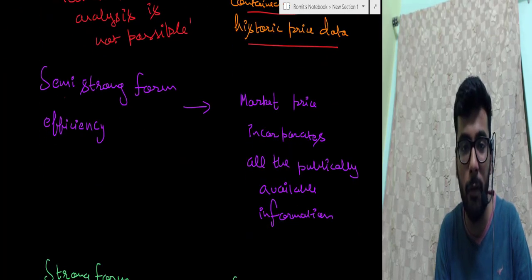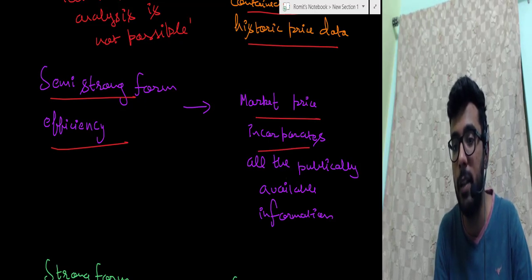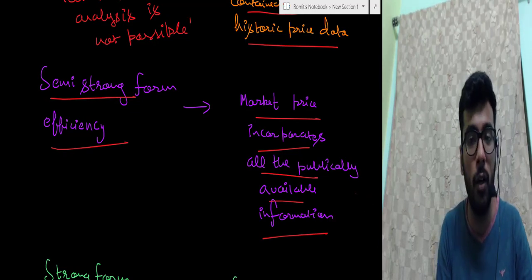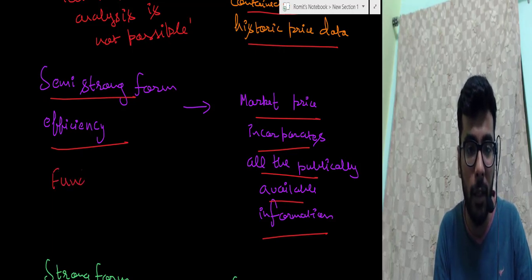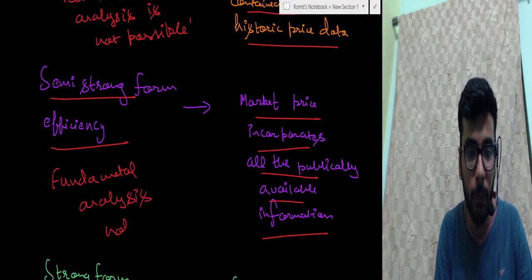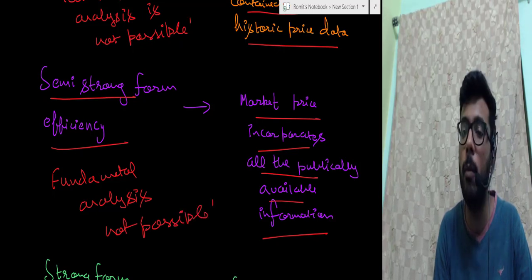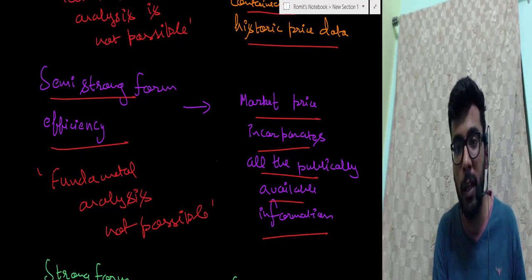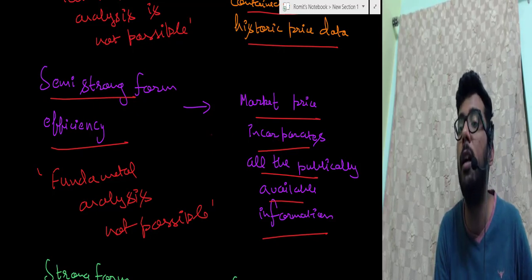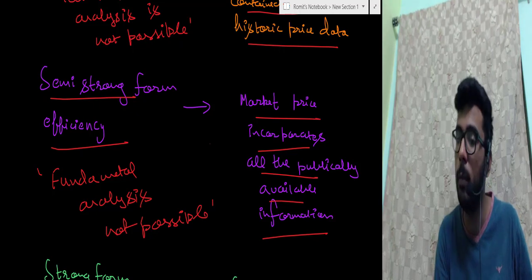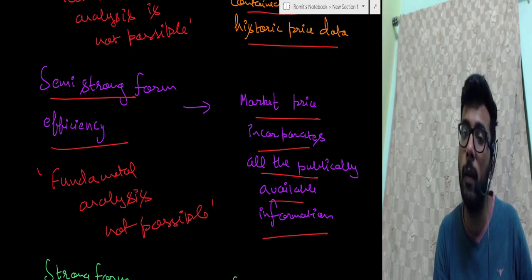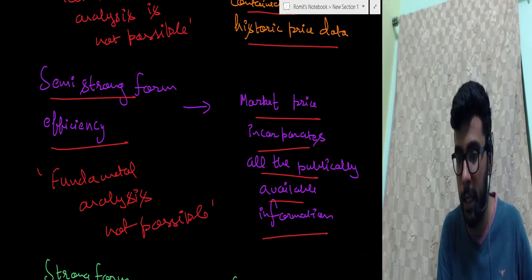Semi-strong form efficiency says that the market price incorporates all publicly available data. All data which is publicly available is already incorporated in the market price, which means that fundamental analysis is not possible because the market price correctly incorporates all publicly available data related to the company. The company is optimally priced according to publicly available data, so you cannot use that data to say whether it is overpriced or underpriced.